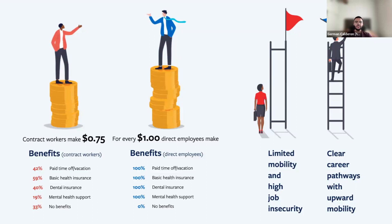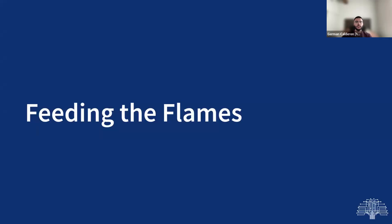Without bargaining power to advocate for better pay, disturbing stories about worker conditions are surfacing every day. Many of the most impacted workers are contract workers performing what's known as 'ghost work' — a term describing work that feels automated but actually has a person behind the scenes, such as content moderation. In our research on contract workers in tech, we found that contract workers receive fewer benefits and less pay than tech employees while doing the same work, and these workers are disproportionately Black, Indigenous, Latino, Asian, women, and non-binary people.